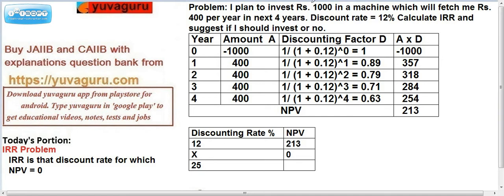I plan to invest Rs.1000 in a machine which will fetch me Rs.400 per year for the next 4 years. Today I am investing 1000 and I will be getting 400 per year for the next 4 years. The discount rate is 12%, meaning the cost of funds is 12%. I have to calculate the IRR and decide whether to invest or not. IRR also represents the percentage of returns which I will be getting from the project.